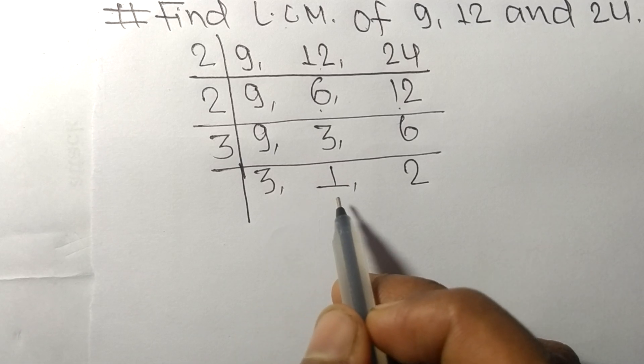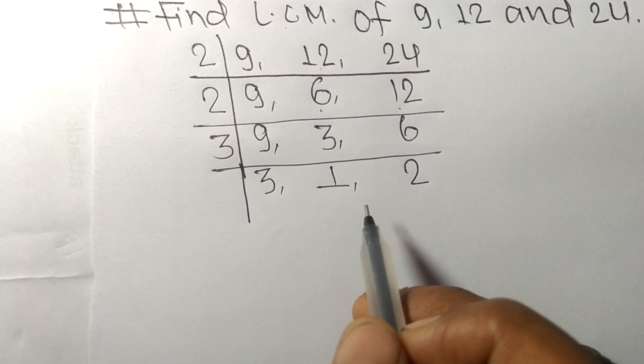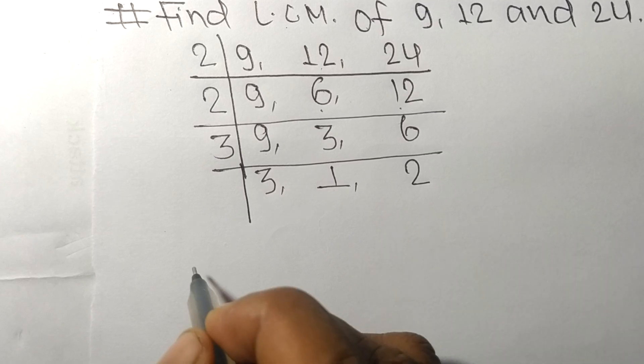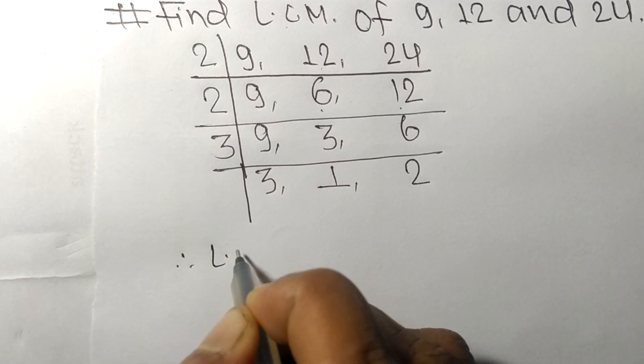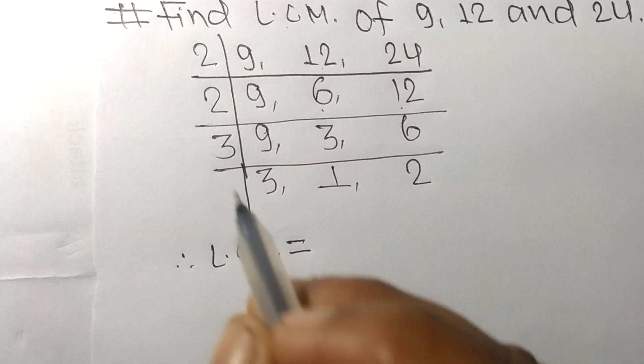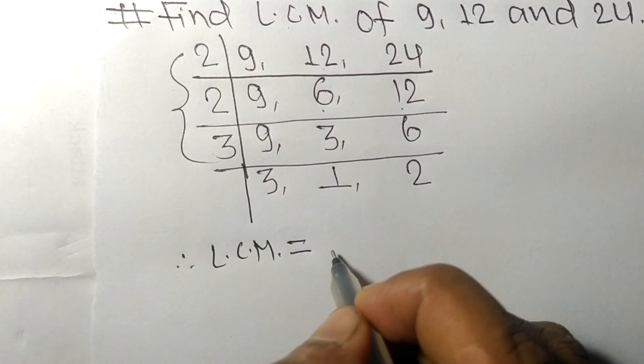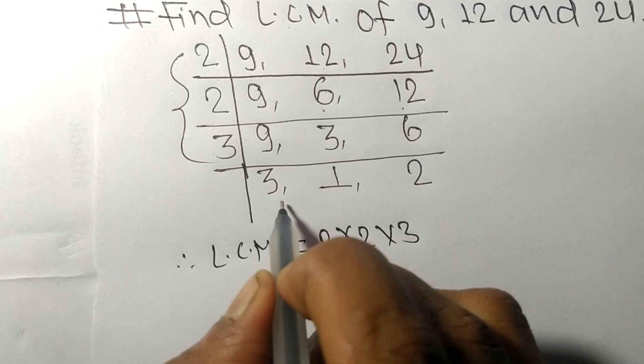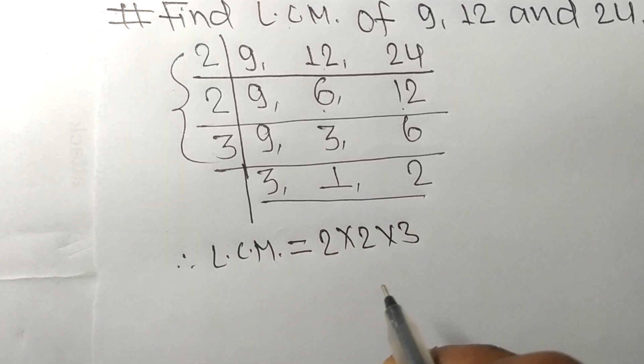Now we got 3, 1, and 2, which are not exactly divisible by the same number. Therefore, the LCM is equal to, from this side, 2 times 2 times 3. From this side we choose the numbers greater than 1, that is 3 and 2.